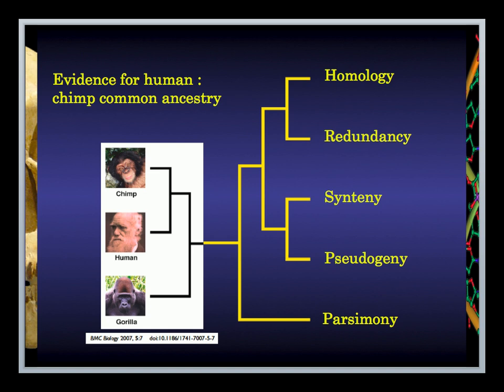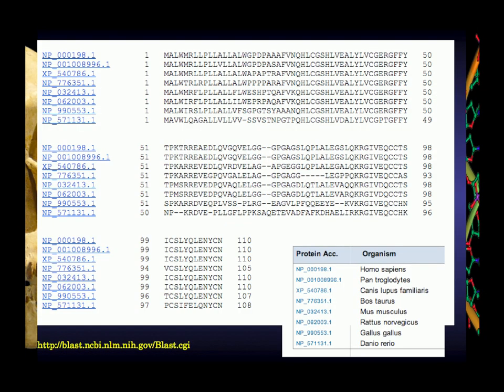Starting with homology. What you're looking at here is the genetic sequence of one gene in many different species. The top one is human, chimpanzee is right next to it, and then these various other species. The next one down is dog, then cow, mouse, rat, chicken, and this is a small minnow called a zebrafish. The gene that you're looking at is insulin.